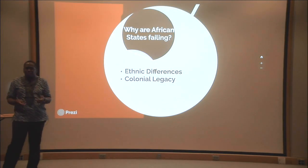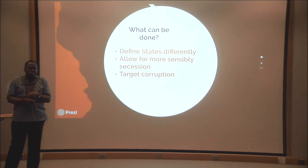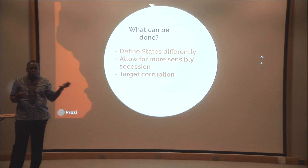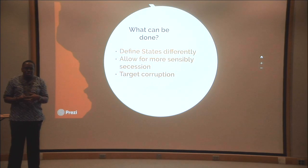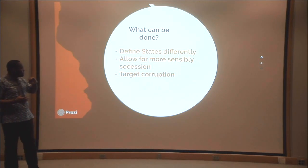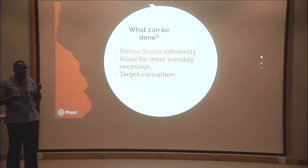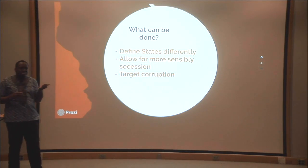So those are some reasons why African states are failing. But what are some solutions people have offered? No one wants to see a child like Obi malnourished and impoverished, but even with good intentions, not much is actually being done. Some scholars have offered good examples to consider. The first is to define states differently.